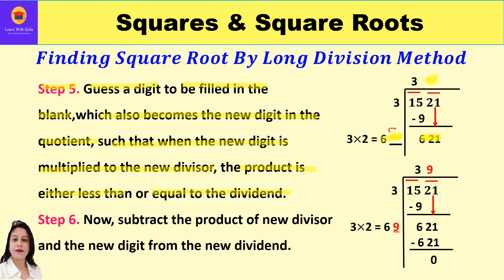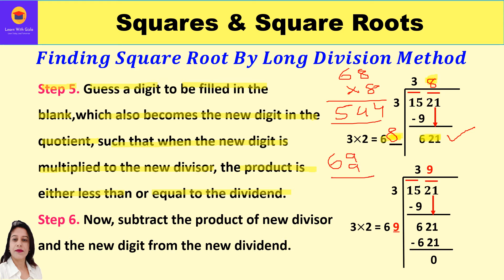For example, trying 8: 68×8=544, which is less than 621. Trying 9: 69×9=621, which is exactly 621. So we take 9 — it goes in the blank making the divisor 69, and 9 also appears in the quotient. Step 6: subtract the product from the new dividend. 621 minus 621 gives a remainder of 0.